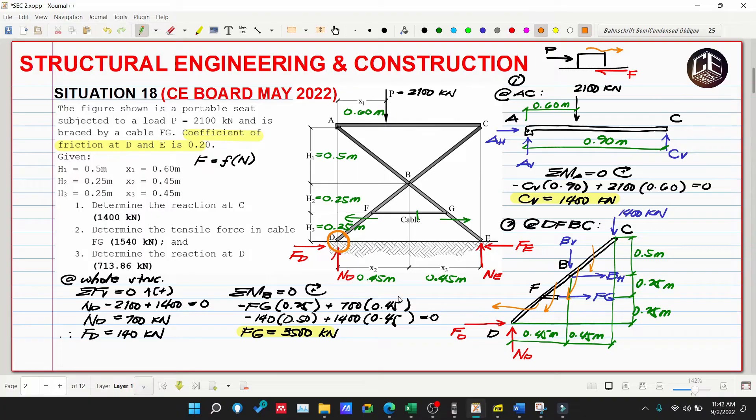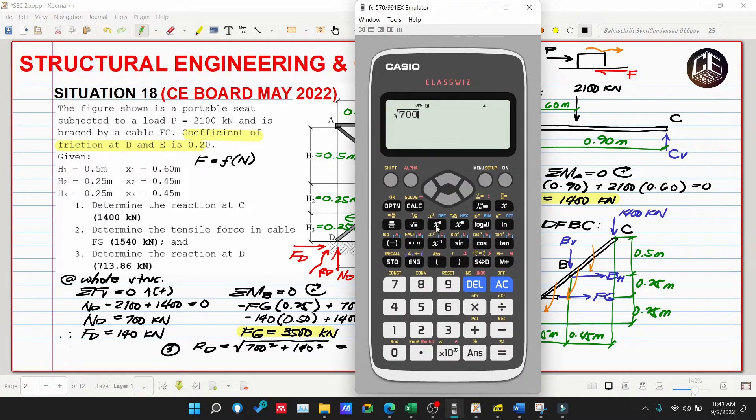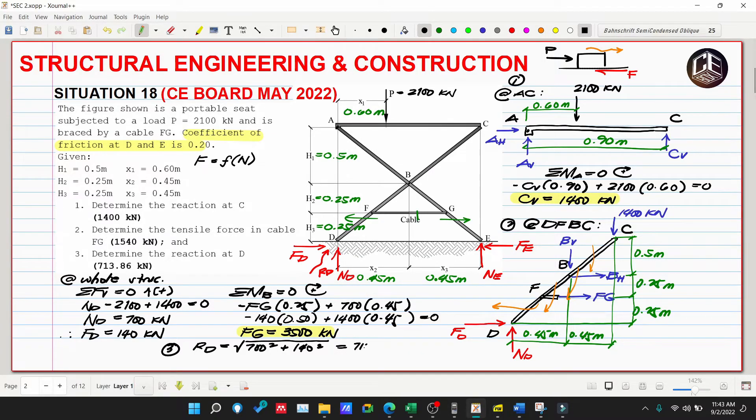Next, determine the reaction at D. To find RD, we solve the resultant using the Pythagorean theorem: RD equals square root of ND squared plus FD squared. That's square root of 700 squared plus 140 squared, which equals 713.863 kilonewtons. The direction is upward to the right.